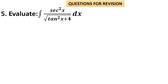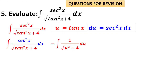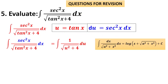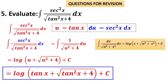Sometimes you may get a problem that reduces to this type by substitution. Here the integral contains secant squared and tan. Since the differentiation of tan is secant squared, let u = tan x, so du = sec²x dx. Replace sec²x dx with du and tan x with u, giving ∫du / √(u²+4). Apply the √(a²+x²) formula — which is log(x + √(x²+a²)) — to get log(u + √(u²+4)). After resubstitution: log(tan x + √(tan²x + 4)) + c.